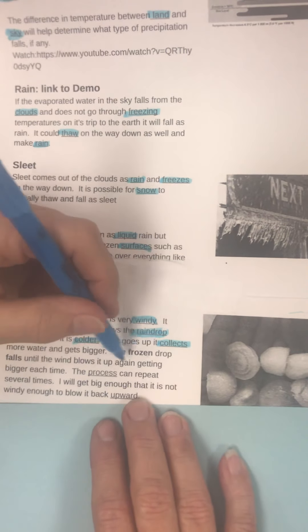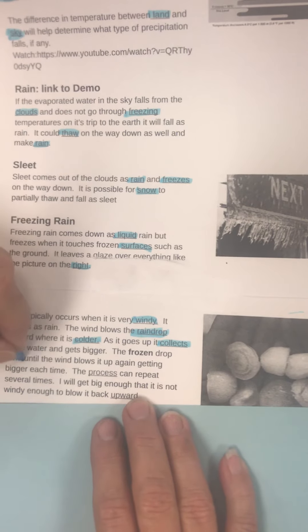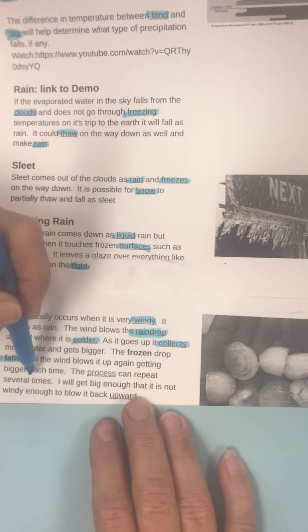So, anyway, the frozen raindrop falls until the wind blows it up again, getting bigger each time. The process can repeat itself several times. It will get big enough that it is not windy enough to blow it back upward. So, at some point, it's going to weigh so much that the amount of wind that's currently happening isn't strong enough to pick it up again, and it'll fall to the ground.